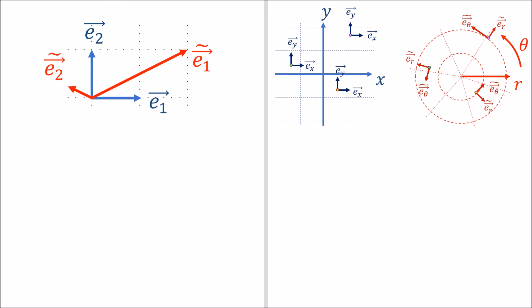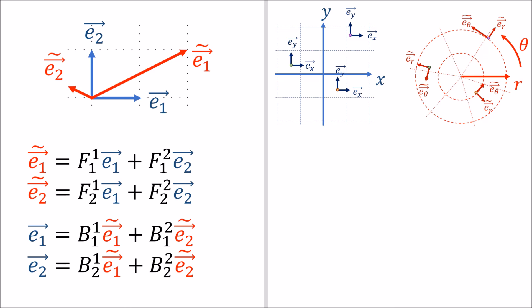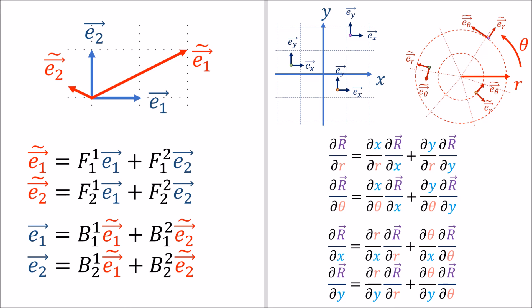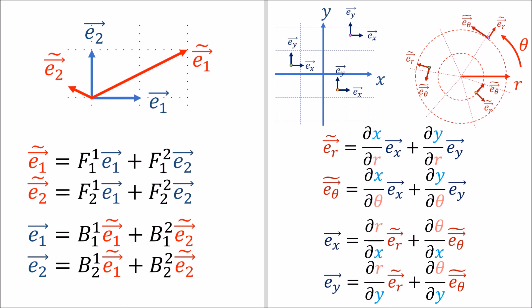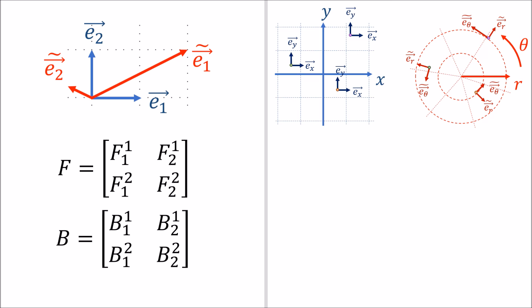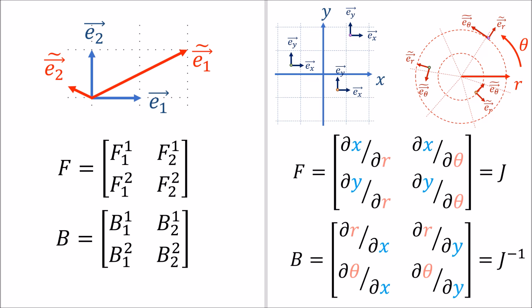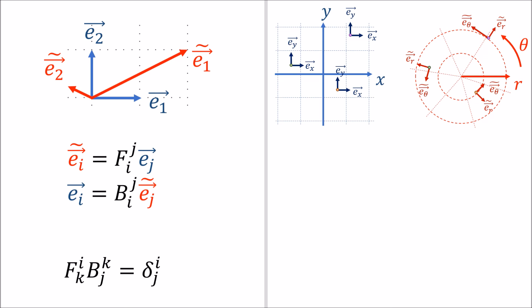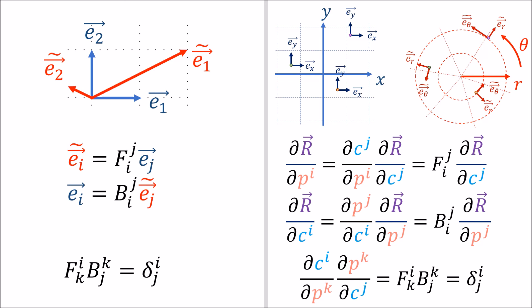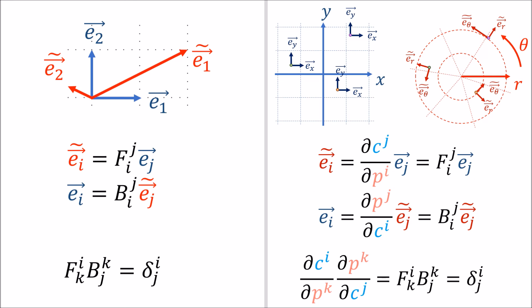To sum up what we learned in this video: for curvilinear coordinates where the basis vectors change from point to point, the analogues of the forward and backward transform formulas are given by the multivariable chain rule. We can use either partial derivative notation or basis vector notation. Just as we can store the forward and backward coefficients in the F and B matrices, we can store the partial derivatives for the forward and backward transforms in the Jacobian matrix and the inverse Jacobian matrix, written out generally for any number of dimensions using c and p coordinates. And just as the F and B matrices are inverses that give the Kronecker delta when multiplied, so too are the Jacobian and inverse Jacobian matrices.